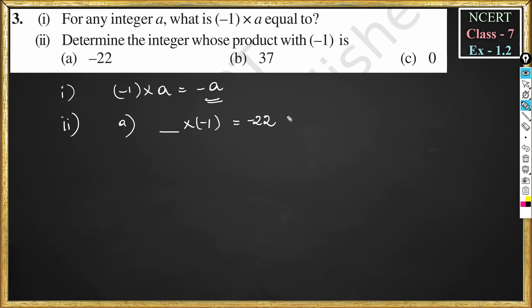We learned in the introduction to exercise 1.2 that any integer a, if it is multiplied with minus one, then that becomes additive inverse. That means the sign of the integer changes.